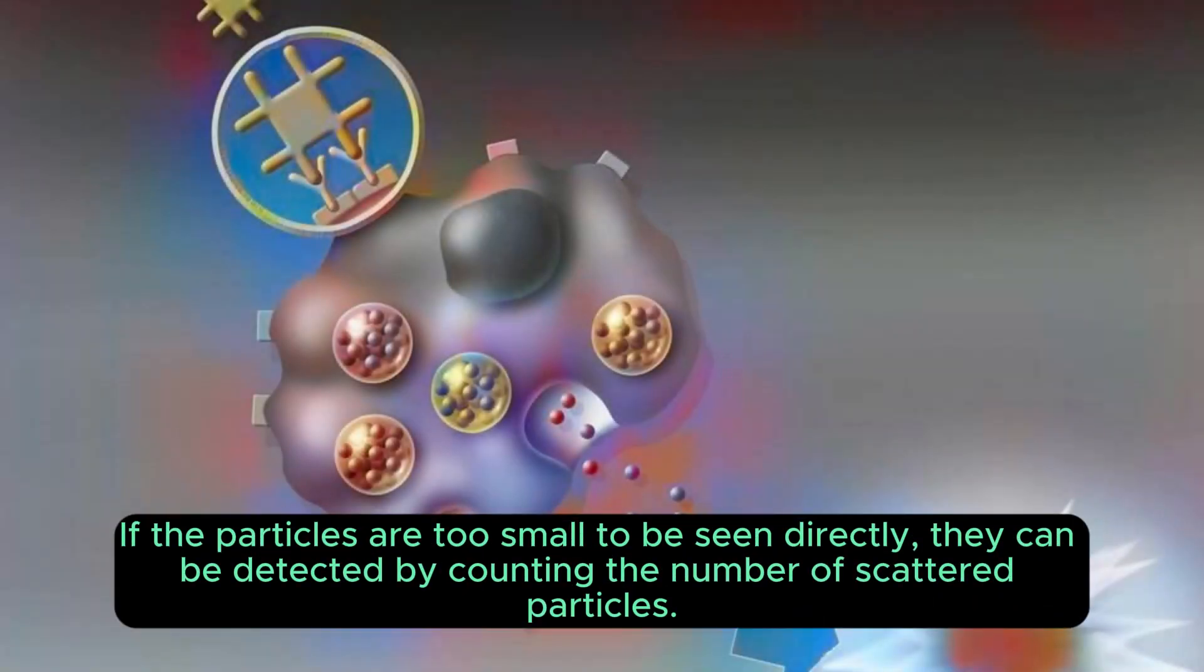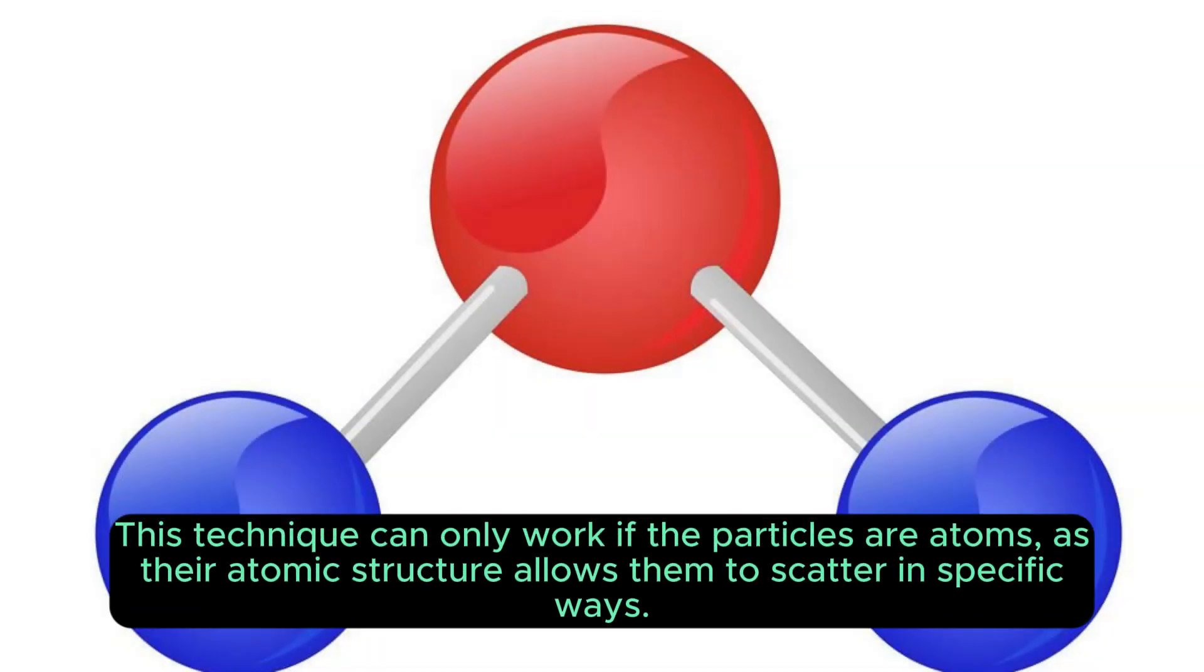If the particles are too small to be seen directly, they can be detected by counting the number of scattered particles. This technique can only work if the particles are atoms, as their atomic structure allows them to scatter in specific ways.